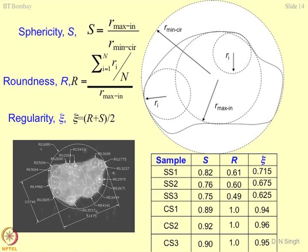This is a grain which is highly irregular. And then this was the model which was proposed by Dr. Bartek: if you draw two circles, one which is inscribing this and another one which is subscribing it, the radius of the circle which is inscribing is r_max_in and the circle which is outside is the r_min circle. The ratio of this to this will be sphericity.